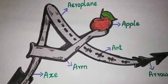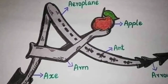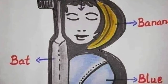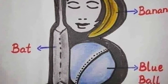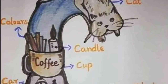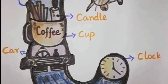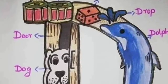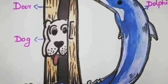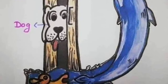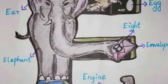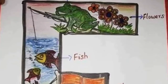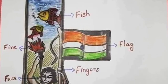A for apple, B for banana, C for cat, D for drop, E for elephant, F for flag.